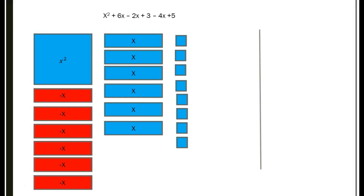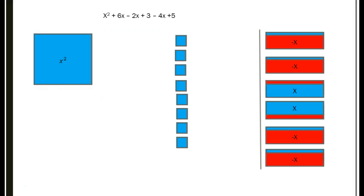Okay, let's check your answers. Did all of your x's cancel each other out and zero out? It should have all matched up. What's left is our blue boxes for the x squared and the unit ones. We should have 1 x squared and plus 8. Did you get that answer? Good. That is combining like terms. If you need to rewind this video for more practice, you can do that, or do some more practice online as well.